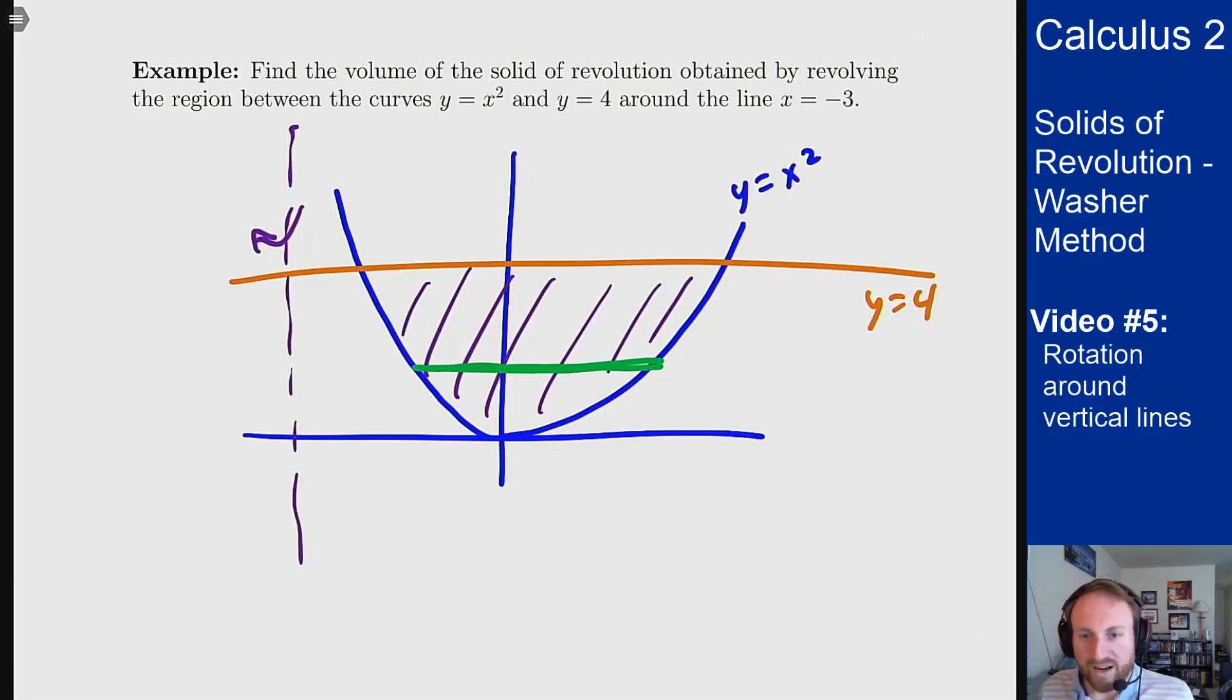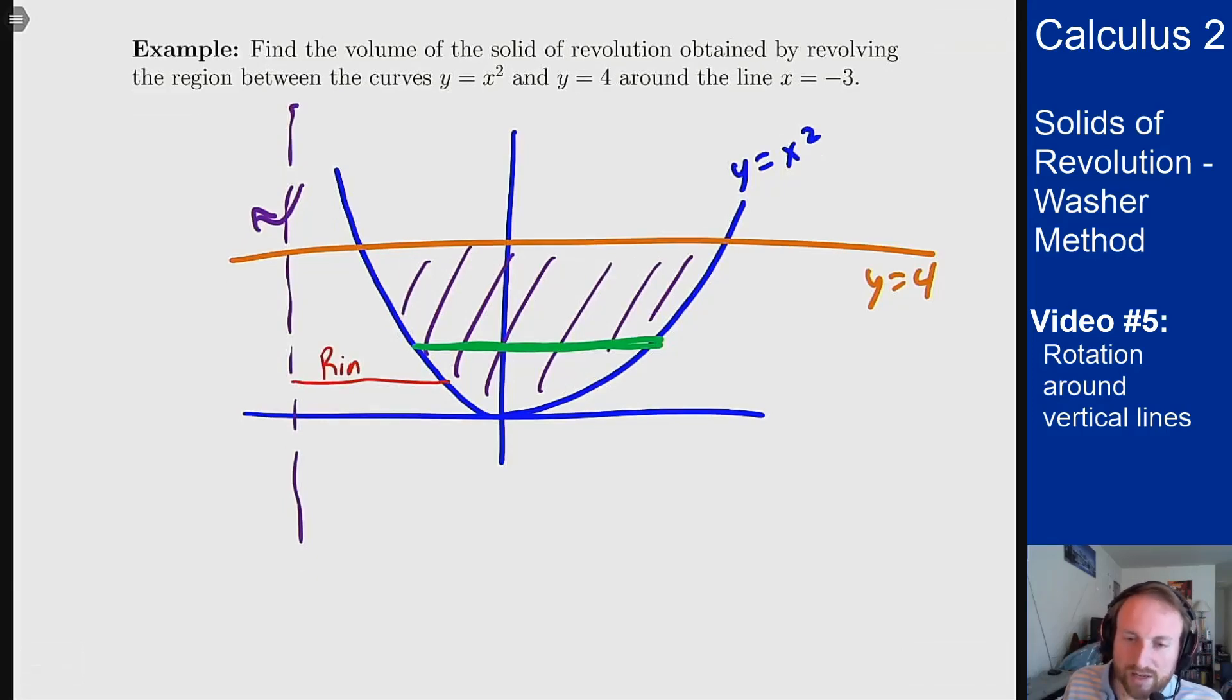So it's this segment here that I'm trying to rotate around this line. That will give me a washer, but I need to figure out what are my inner and outer radii for this setup. The inner radius should be here. And so where is that? Well this is between minus 3 and the branch of this curve here.